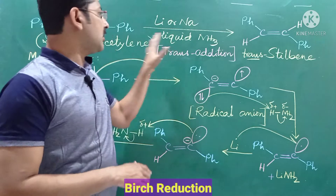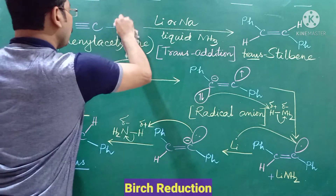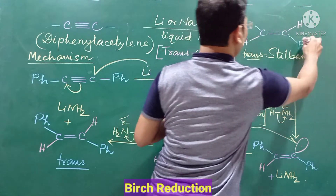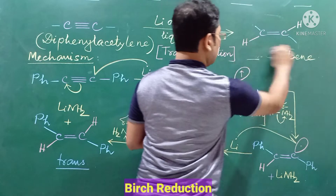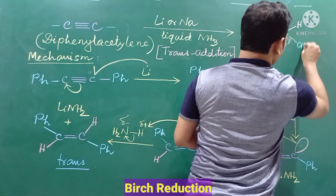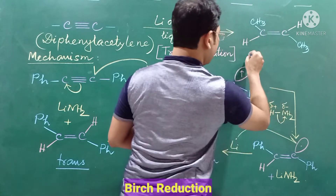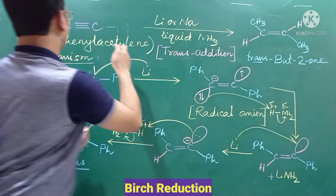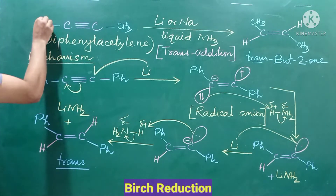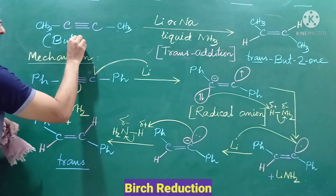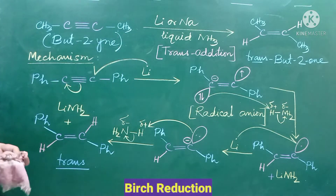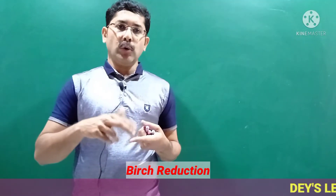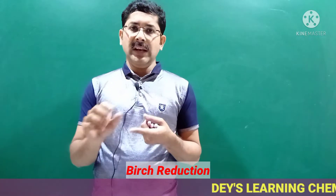By Bart's reduction, you will always get the trans product. If two alkyl groups are present, you will get the trans alkene. For example, 2-butyne on Bart's reaction gives trans-2-butene. Similarly, if you have a 2-hexyne molecule, it will produce trans-hex-2-ene on Bart's reaction, using lithium or sodium in liquid ammonia.